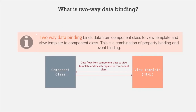Let's understand two-way data binding with an example. Say in the web page we have a text box and whatever value the user enters in that text box we want to assign to a property of the component class. In the same way, whenever the value of that property changes in the component class we want to display that value in the text box in the web page. So here the data is flowing in both directions, and this is what two-way data binding is.